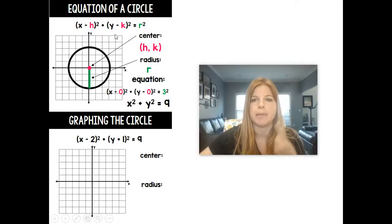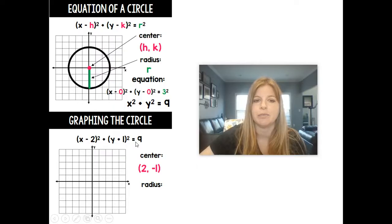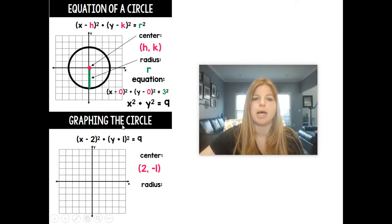But since it says plus 1, that actually means the k value would have to be a negative 1. So 2, negative 1 is my center. And again, think about it. It would be x minus 2, which is here, and then y minus a negative 1 would actually make it y plus 1.